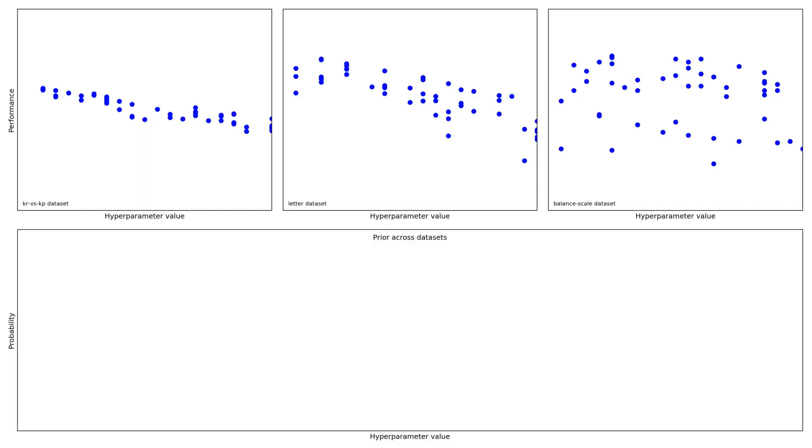In this diagram, the top three images each represent a dataset. Each dot represents a run. The x-axis shows the value of a given hyperparameter. The y-axis shows how it performed. We take the best 10 hyperparameter values from each dataset to infer a nonparametric distribution.